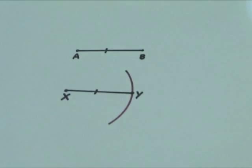Notice that line segment XY is not unique. XY is the radius of a circle with center X and radius length AB.